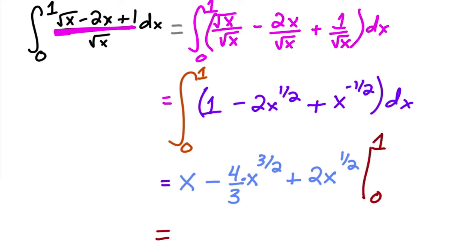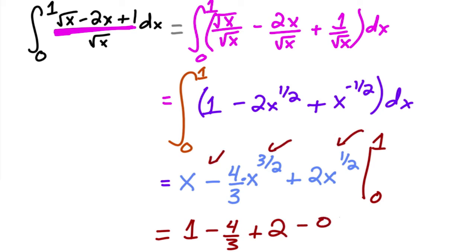Evaluating from zero to one: plugging in one gives one minus four thirds plus two, minus zero for all the x terms at zero. Putting everything in thirds: three thirds minus four thirds is negative one third, plus six thirds gives five thirds.